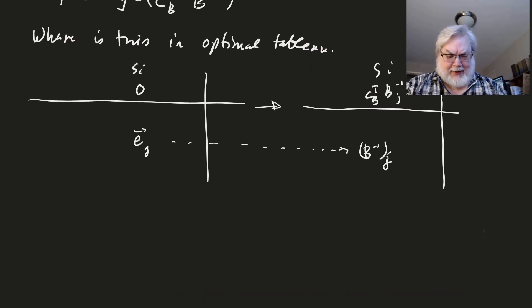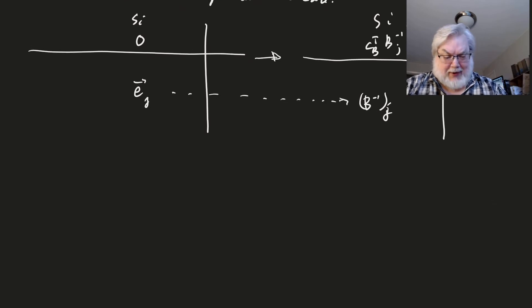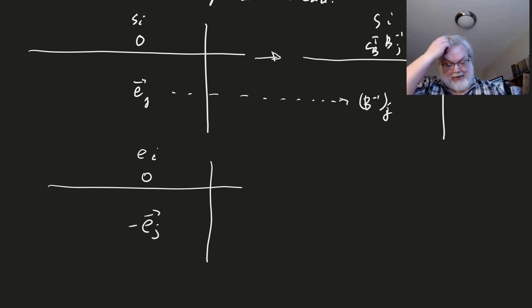So what happens then if that's not an SI? Are there other variables that we might use? Why, yes. What happens if we have an excess variable, EI? We still have zero there, but the initial tableau is minus EJ, and so that's, again, the J-th element of your identity matrix.